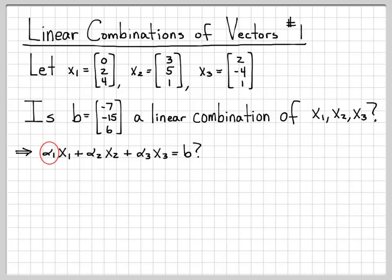In other words, can I find some numbers alpha 1, alpha 2, and alpha 3, such that when I weight each vector x1, x2, and x3 and add them up, can I get b out of this? This is the vector formulation of the equation we're trying to solve.